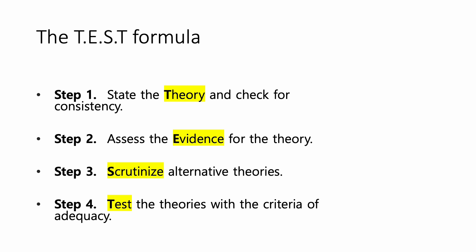Steps two and three are familiar to us. Whenever somebody states a theory to explain something, you want to ask why it's true — show me the evidence. You want to assess the evidence for the theory. Step three means you don't only assess evidence for the theory you prefer, but also scrutinize alternative theories that could either confirm or cast doubt on the theory you are proposing.